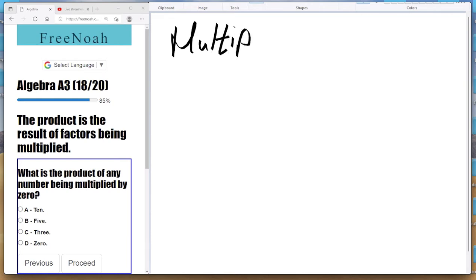right, we have factors. We multiply our factors. And the result of the multiplication is called the product. So, right here it says the product is the result of factors being multiplied.